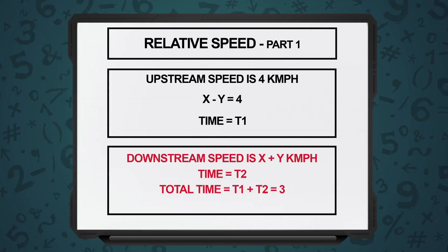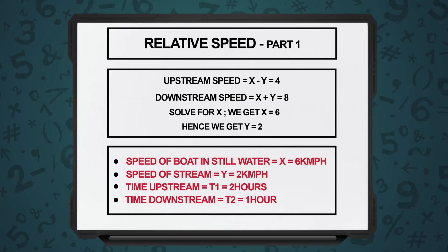If you take all these pieces of information and solve the problem, you can easily figure out: x minus y is already known as 4, x plus y is the downstream speed, and the total time traveled is 3 hours. Set up the equation on the basis of relative speed and distance, and try to solve this problem on paper by yourself.